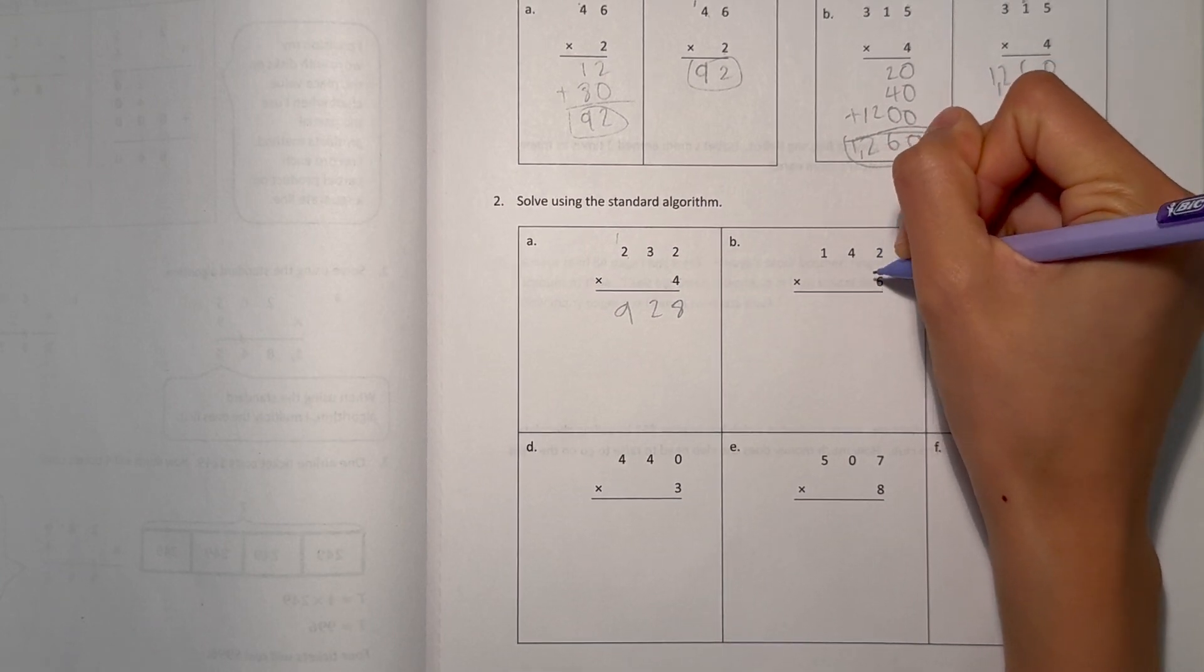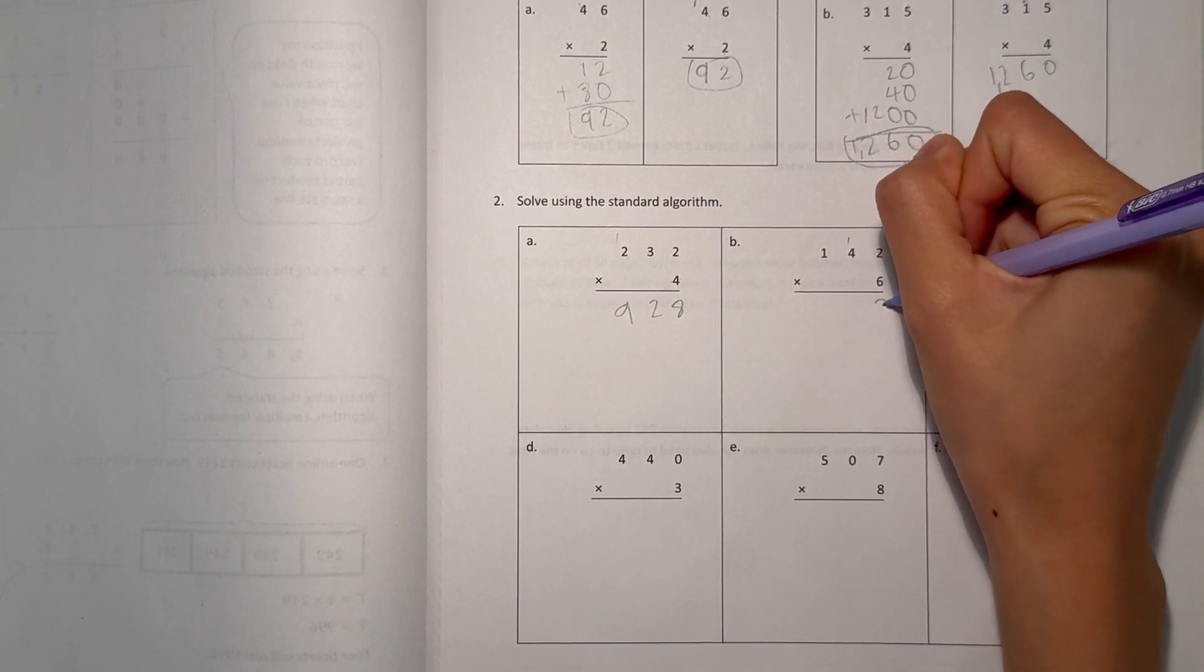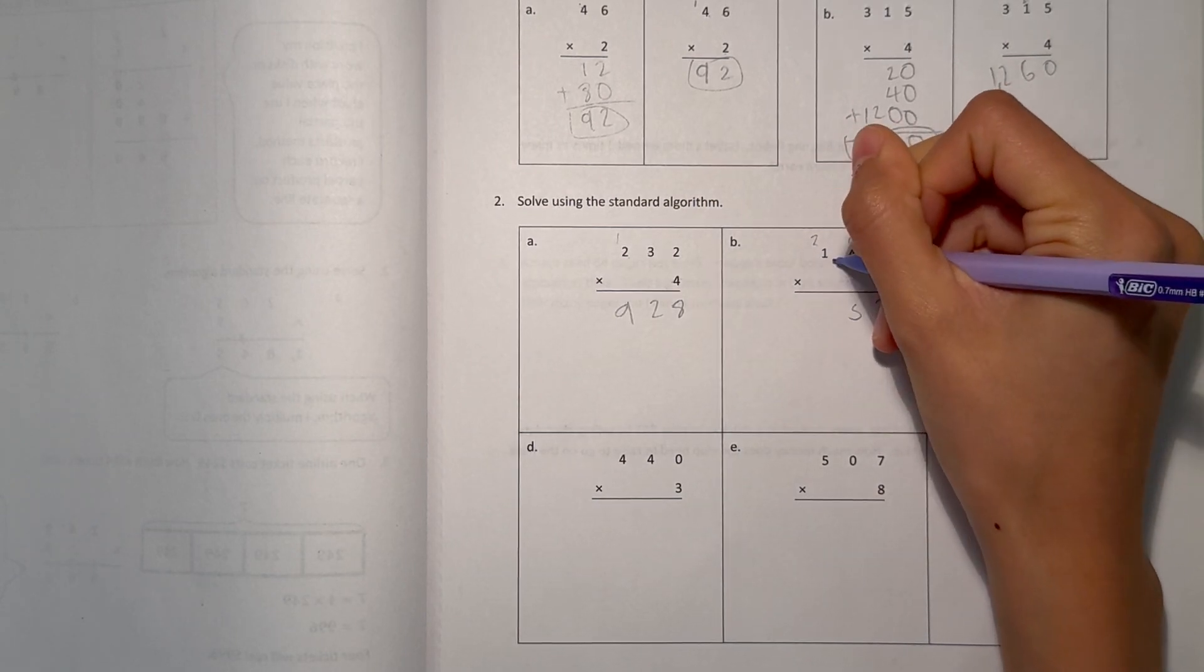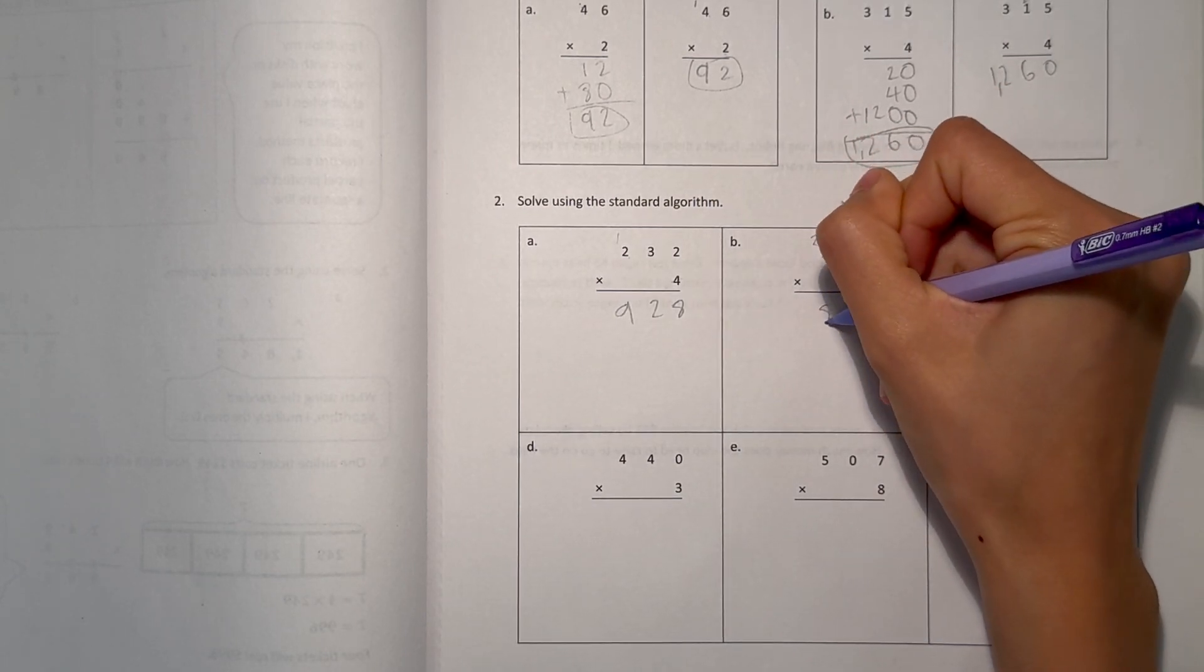B, 2 times 6 is 12, 4 times 6 is 24, plus 1 is 25, and 1 times 6 is 6, plus 2 is 8.